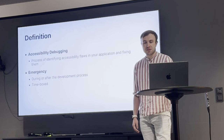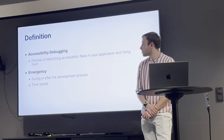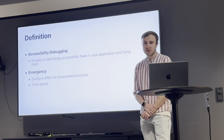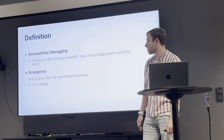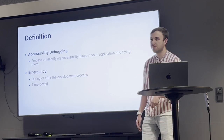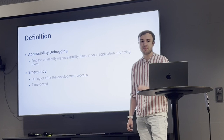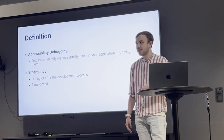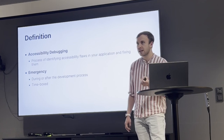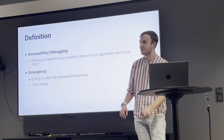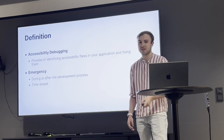Now let's dive into the actual topic. So that everybody has the same notion of emergency accessibility debugging, I want to provide a definition. It can be split into two parts: the accessibility debugging process — identifying and fixing accessibility flaws in your application — and the emergency part, meaning it happens not from the beginning of development but during or after, with only a limited amount of time available.